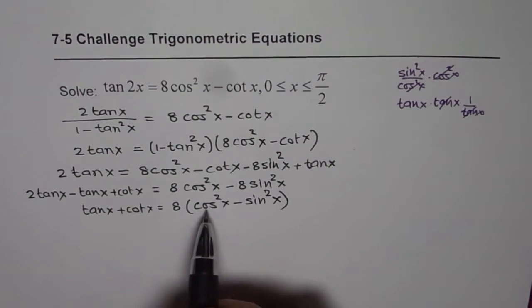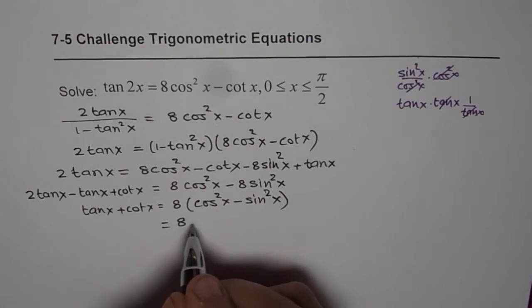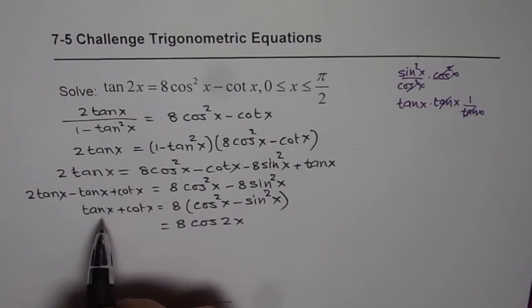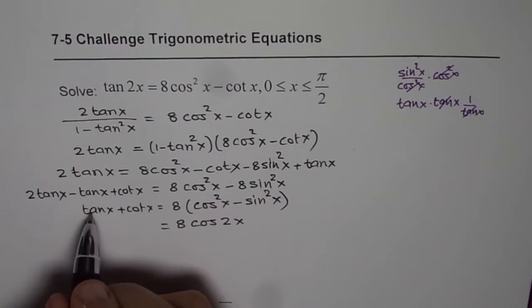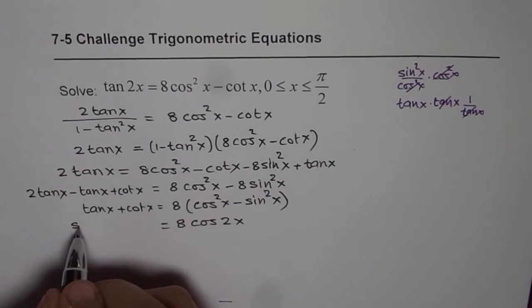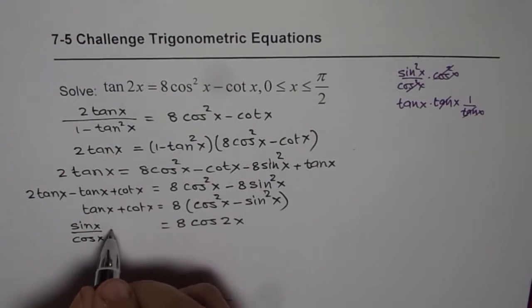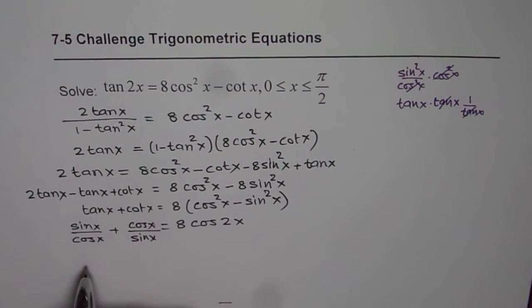Cos square x minus sine square x is cos 2x. We can write this as 8 times cos 2x. Here tan x plus cot x could be written as sine x over cos x plus cos x over sine x. Taking a common denominator of sine x cos x.